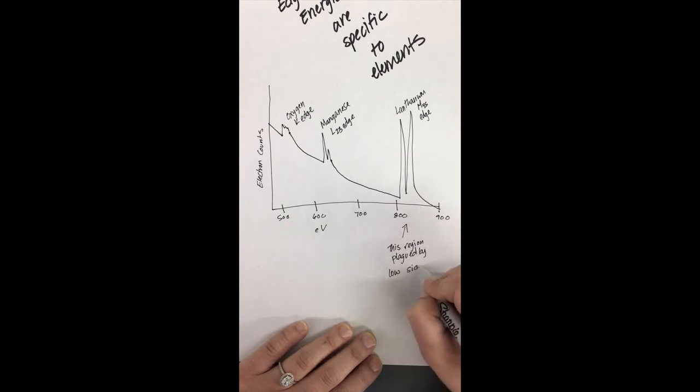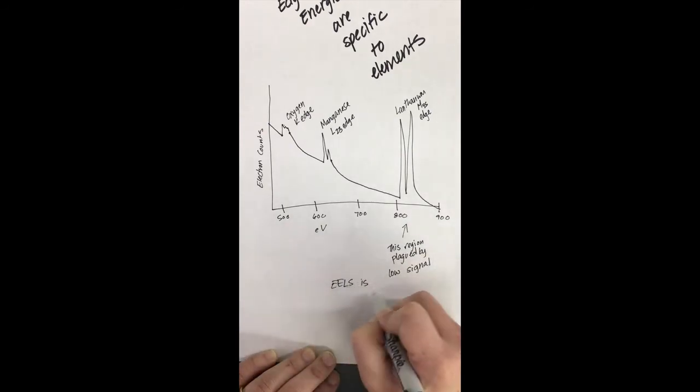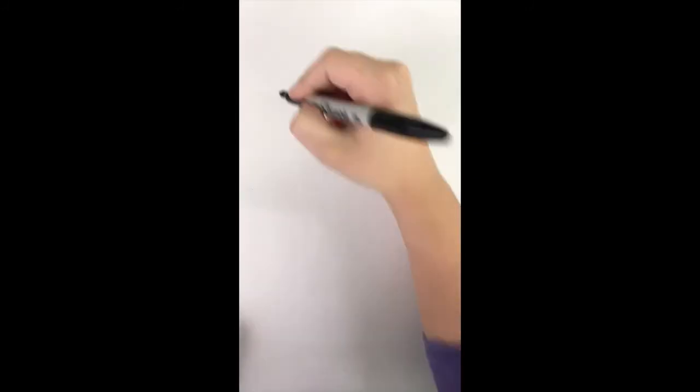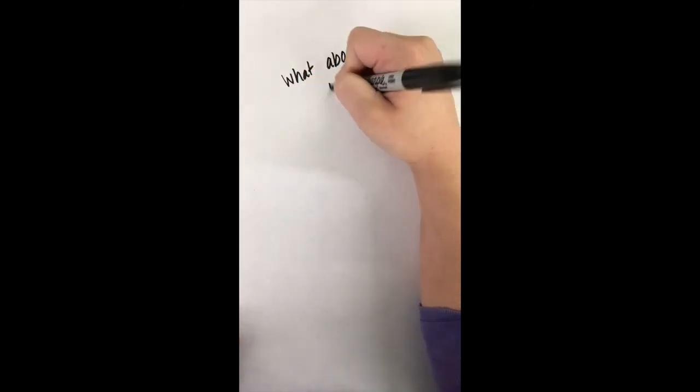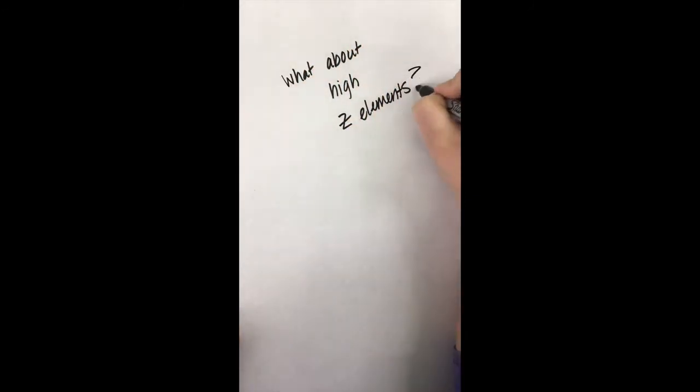However, elements with high atomic mass do not yield very much signal in EELS and therefore another method must be used. So because STEM EELS is a technique most suited for low z elements, what do you do to characterize high z elements?